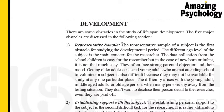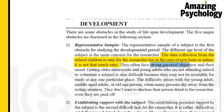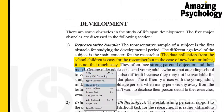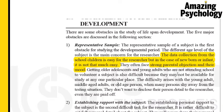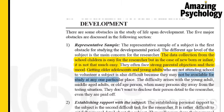The first problem faced by researchers is the representative sample. Data collection from school children is easy for the researcher, but in the case of newborns or infants it is not that easy — they often face strong parental objection. Getting older adolescents and young adults who are not attending school to volunteer as subjects is also difficult, because they may not be available at one particular place.